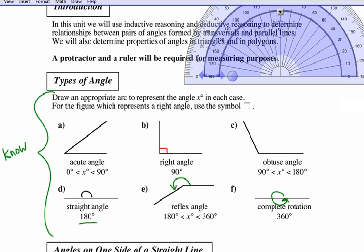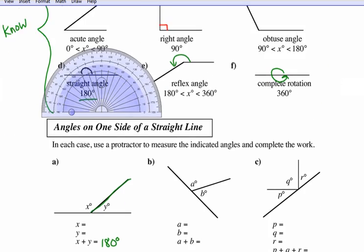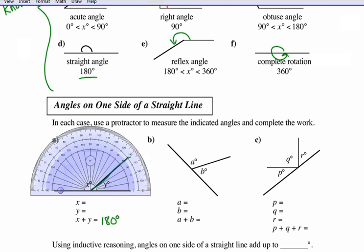Grab your protractor. When we want to find angle x, line up the line x is on and put the center of the protractor where x is. Let's do y first — y is 40 degrees from zero. Then x, starting from zero going the other direction, is 140 degrees. Together they add to 180.